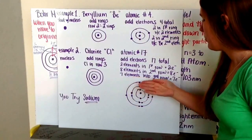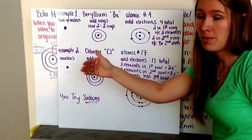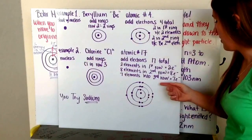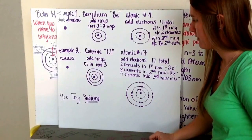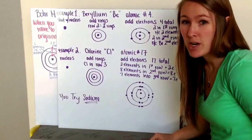And then in my third row, chlorine is the seventh element in, therefore I'm going to have seven electrons. Two, four, six, and seven. Go ahead now and try sodium.